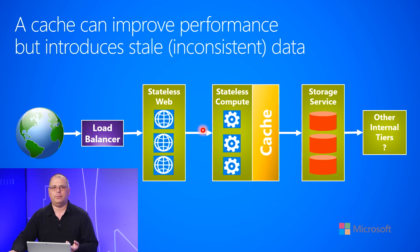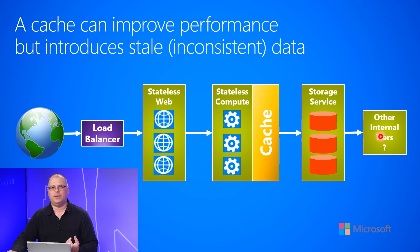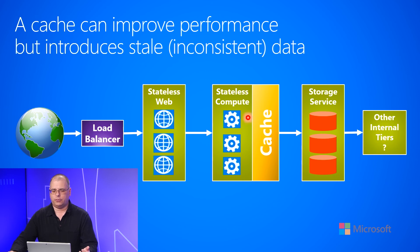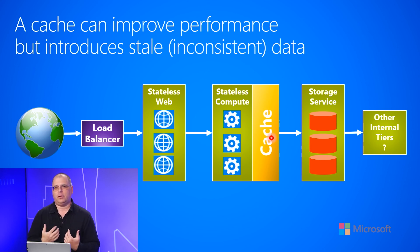So if the same client makes multiple requests into the service, the stateless compute tier can possibly read that information from cache instead of making those additional network hops to the storage service, thereby improving performance. We're temporarily storing the warm data in RAM because it's hot data — reducing our latency and improving our performance. This is a very common architecture used by many websites and services, and hopefully now you see the benefits of doing that.